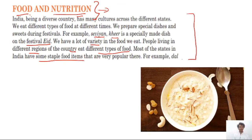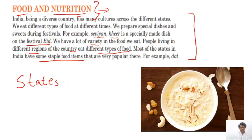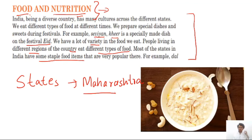India is a very big country with lots of states. We live in the state of Maharashtra, which has a special type of food. Every state in India has a different kind of food. In south India, people eat more rice; in north India, people like to eat more wheat — we make roti out of wheat.